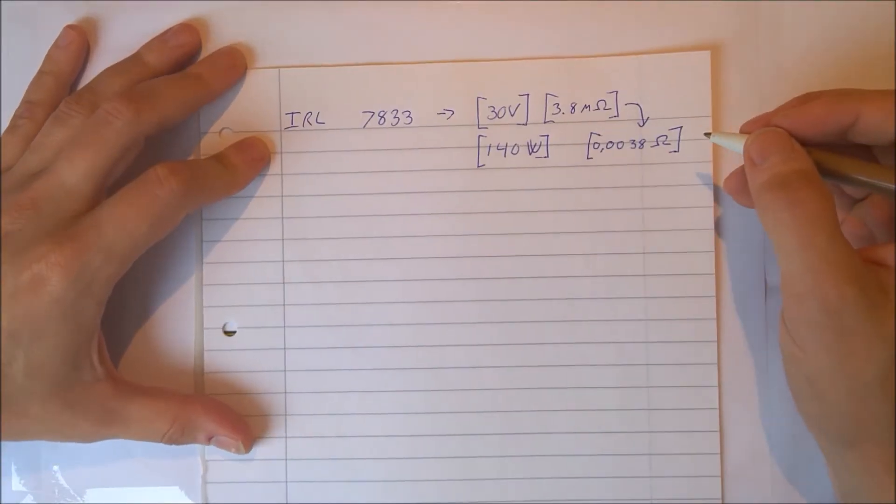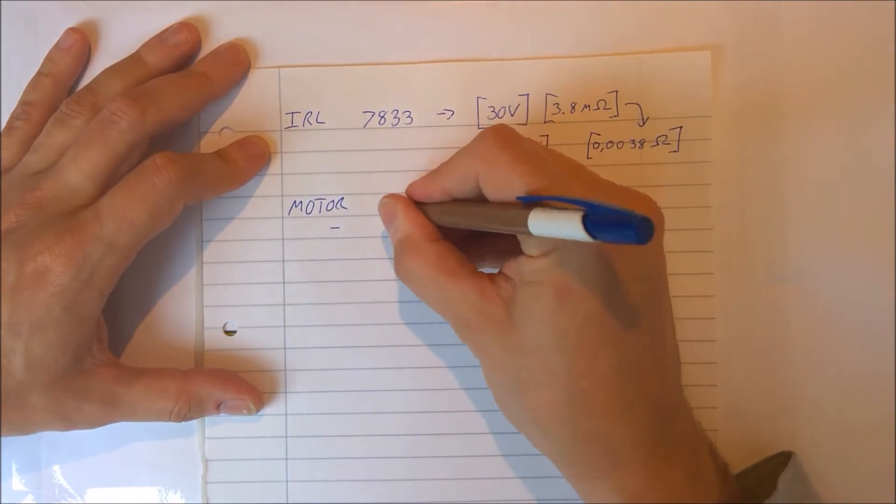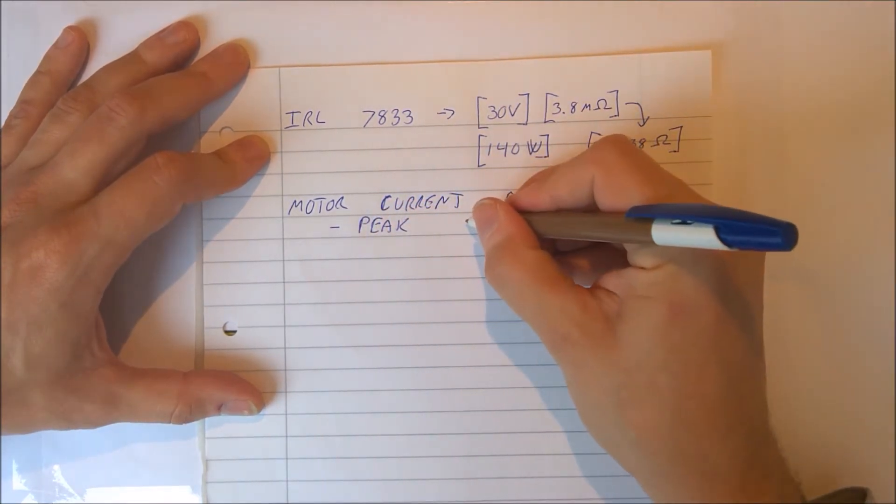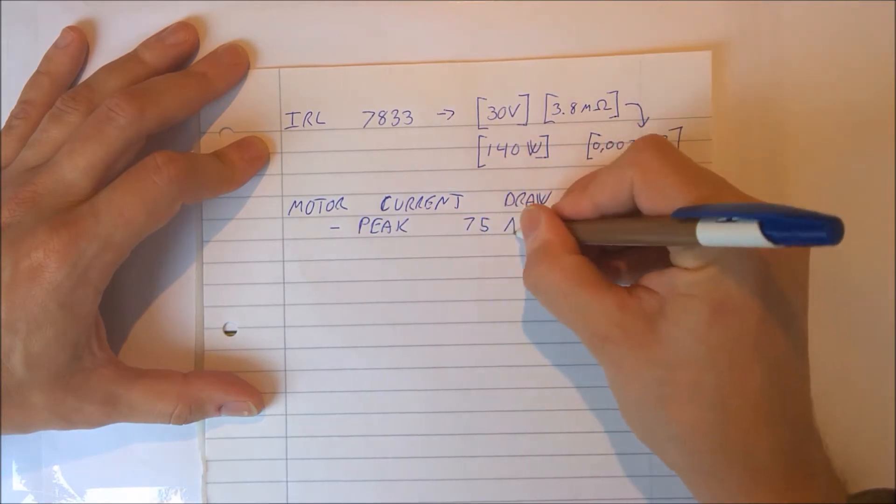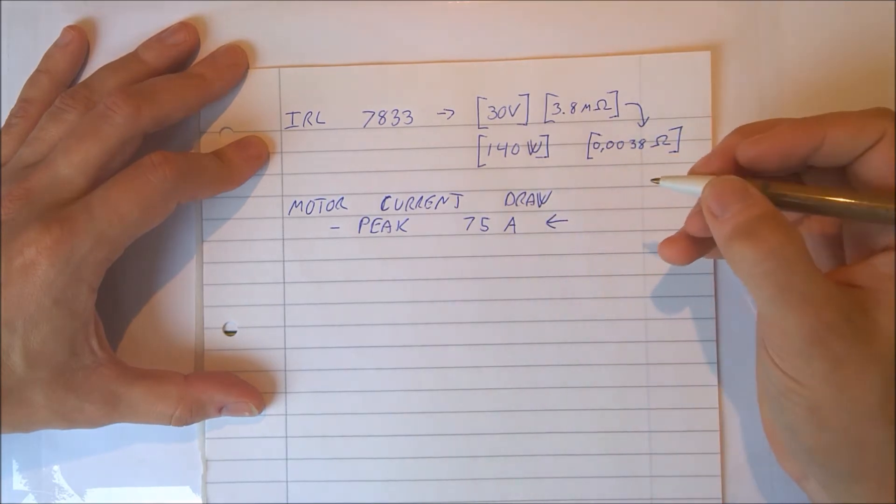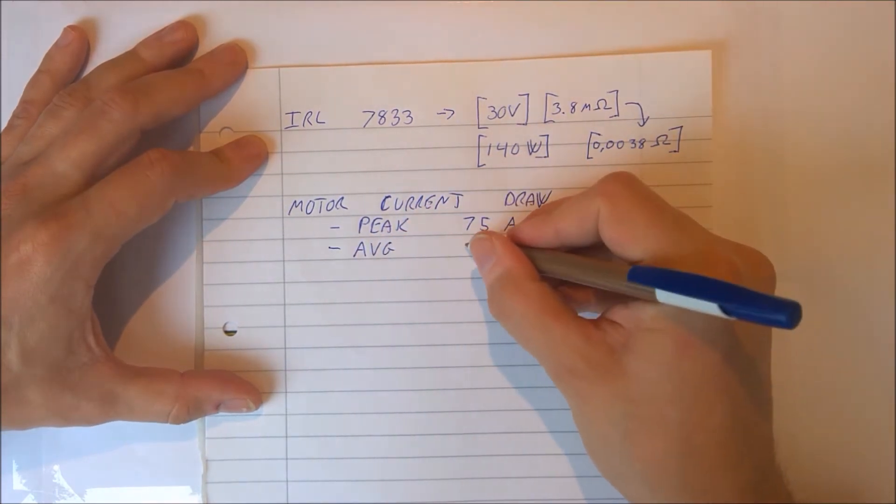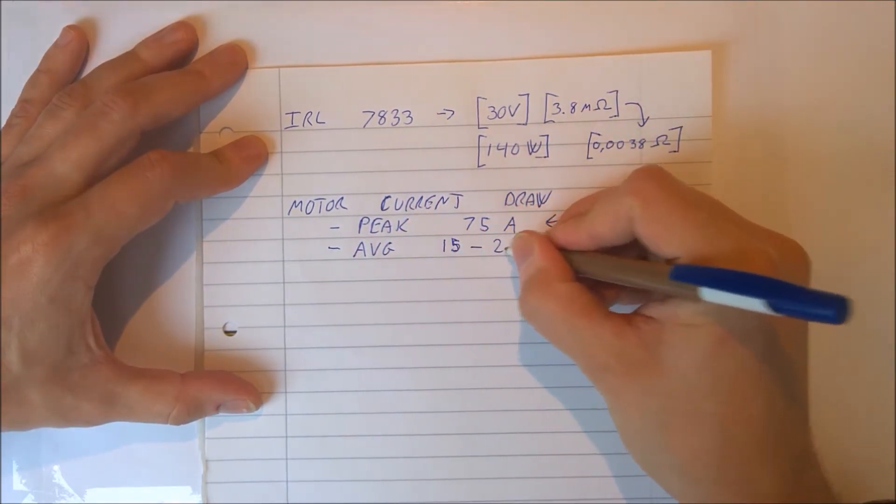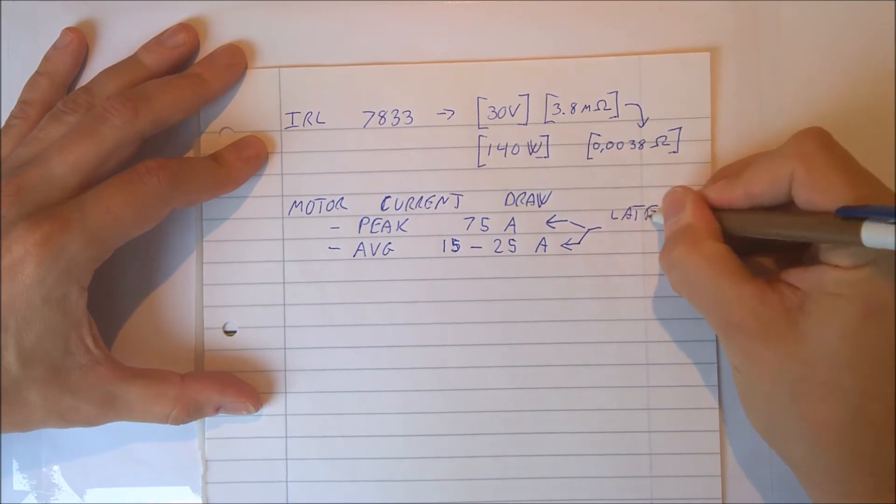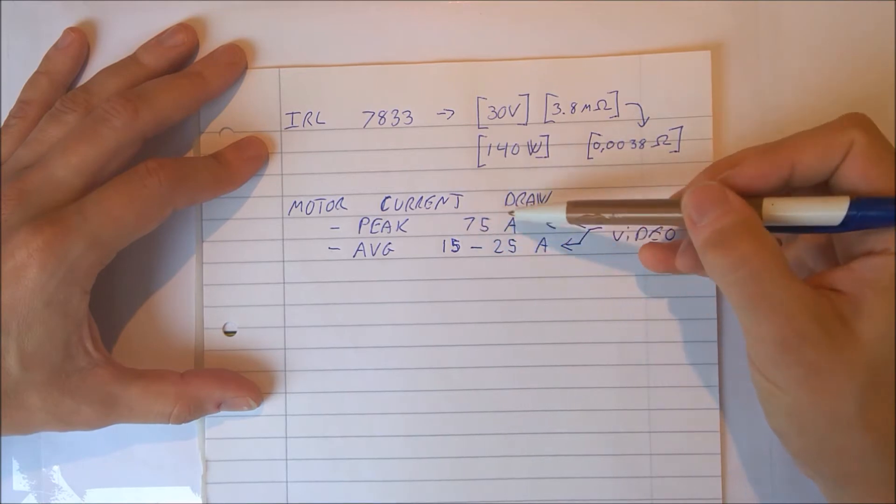Airsoft motors have some characteristics. Peak draw current values around 75A. I will be showing you this value in another video later on. On average it draws 15 to 25A. For now you can just take my word for it.